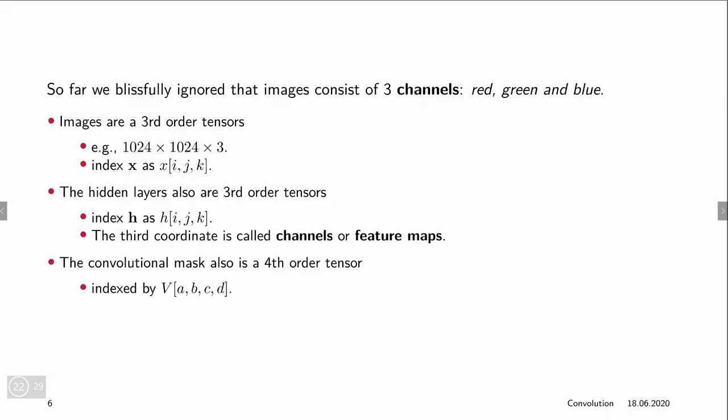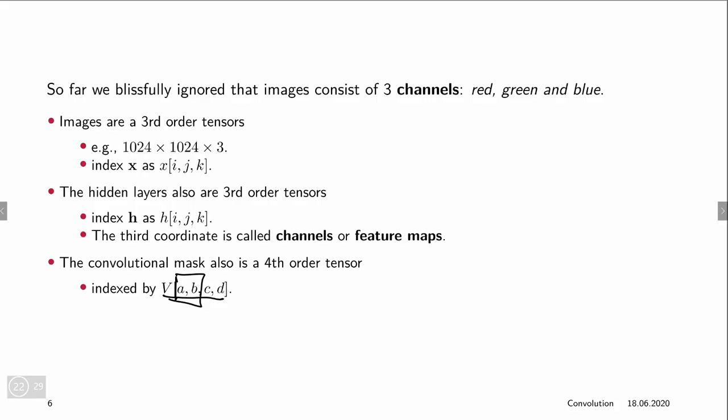So we map each channel in the input to each channel in the output. That's why we have a fourth order tensor. So we have the height and the width of our filter. So if you look again, if this was our image then we have the height and the width. If this is the image x and this is the filter V, I said that x really has three dimensions. And then V actually also has an index for this third dimension of the input and a third dimension of the output.